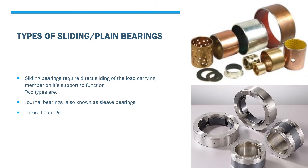Types of sliding bearings, also known as plane bearings. Sliding bearings require direct sliding of the load-carrying member on its support to function. They differ from rolling element bearings because they use fluid between the two surfaces instead of balls and needles. Sliding bearings can be manufactured as split parts or single cylinder pieces called bushings. The two types are journal bearings, also known as sleeve bearings, which are cylindrical and support radial loads, and thrust bearings, which are generally flat and support loads in the direction of the shaft axis.